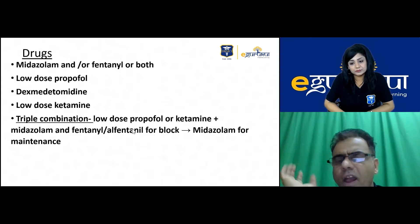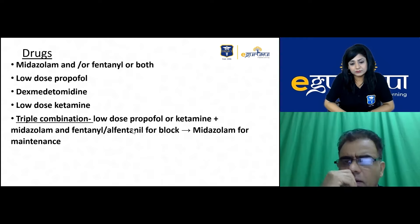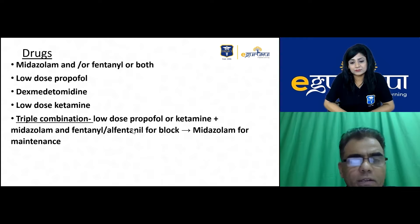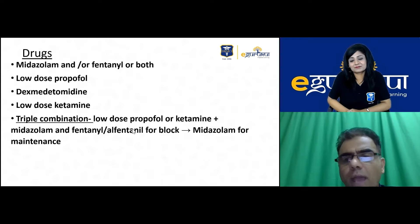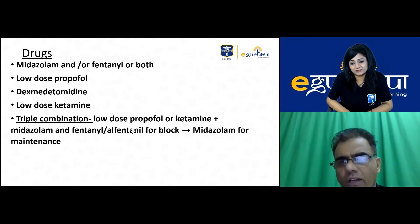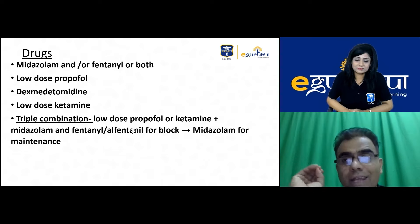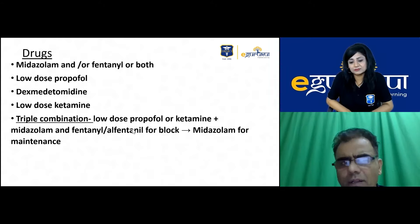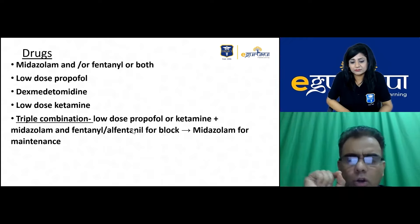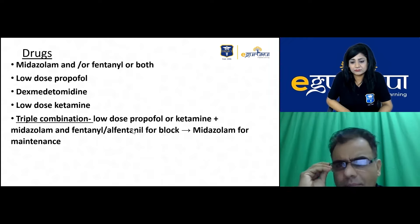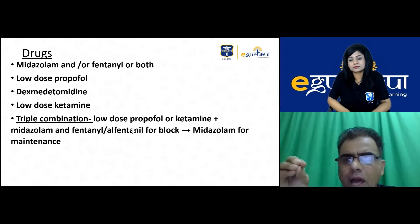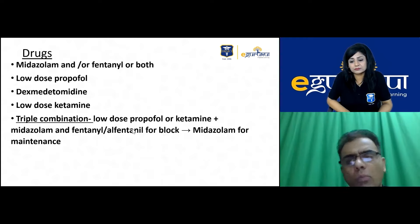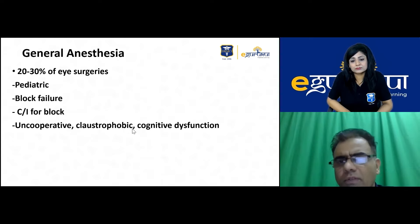If midazolam-fentanyl is insufficient, a small dose of propofol, dexmedetomidine (an alpha-2 agonist), or low-dose ketamine can be used. Low-dose ketamine has been found not to increase intraocular pressure and is used routinely. For giving blocks, a triple combination of small-dose ketamine or propofol plus midazolam plus fentanyl is used, then maintained on midazolam-fentanyl once the block is done.